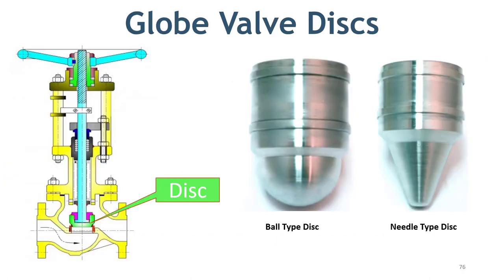The next part of the globe valve is the disc. You should know that all movable and replaceable parts of the valve are collectively known as trim. This disc is available in different shapes and designs, and here you can see some of them. Each disc type has a specific function — for example, a ball-type disc is used for throttling, whereas a needle-type disc is used where fine flow control is required.